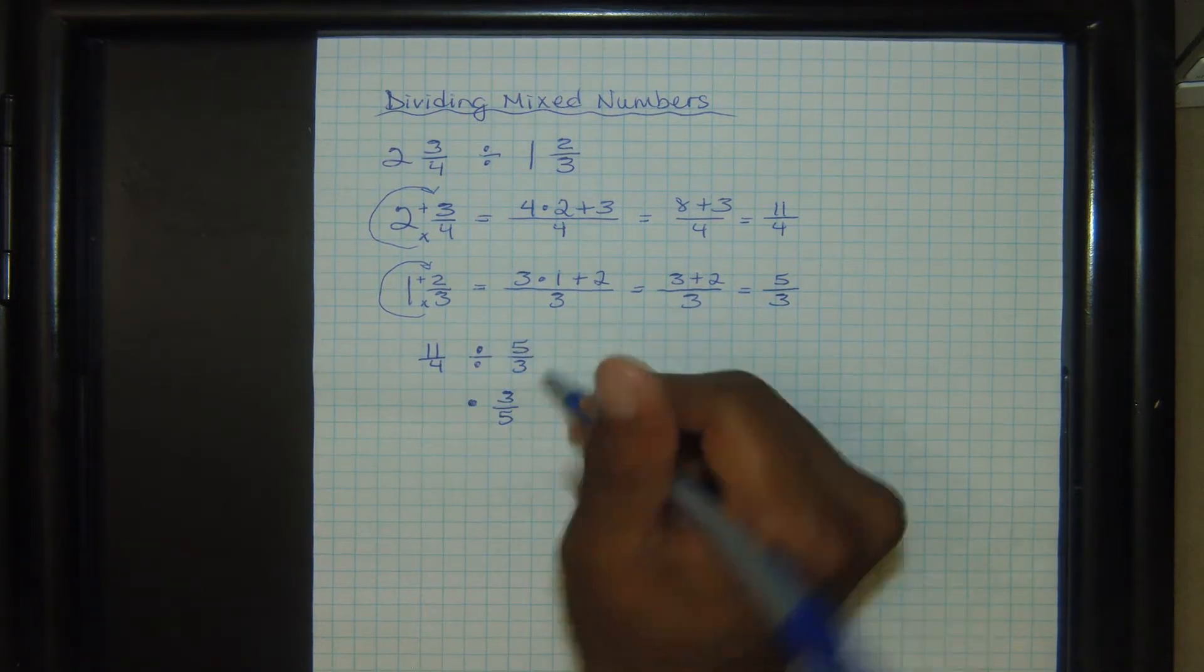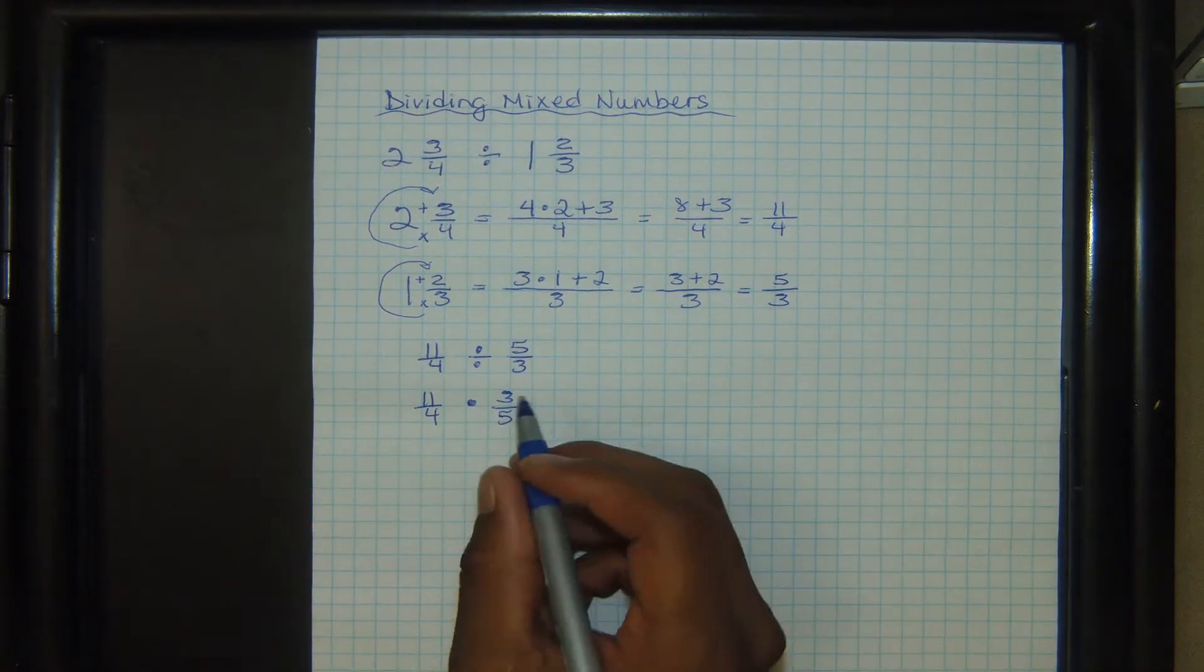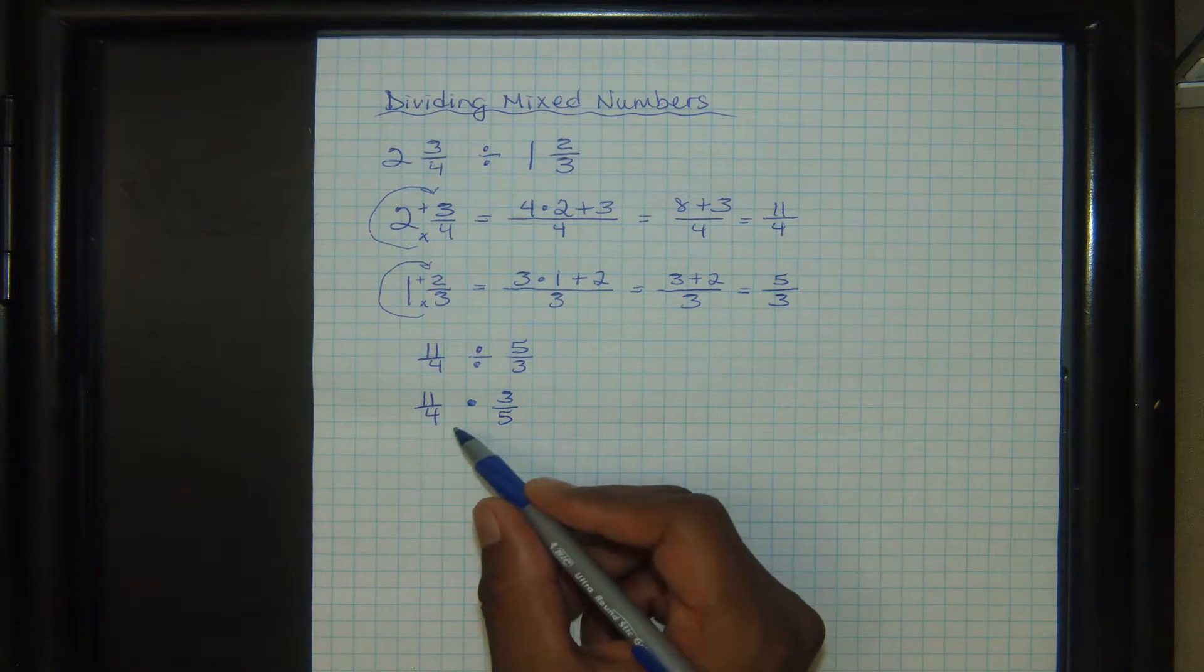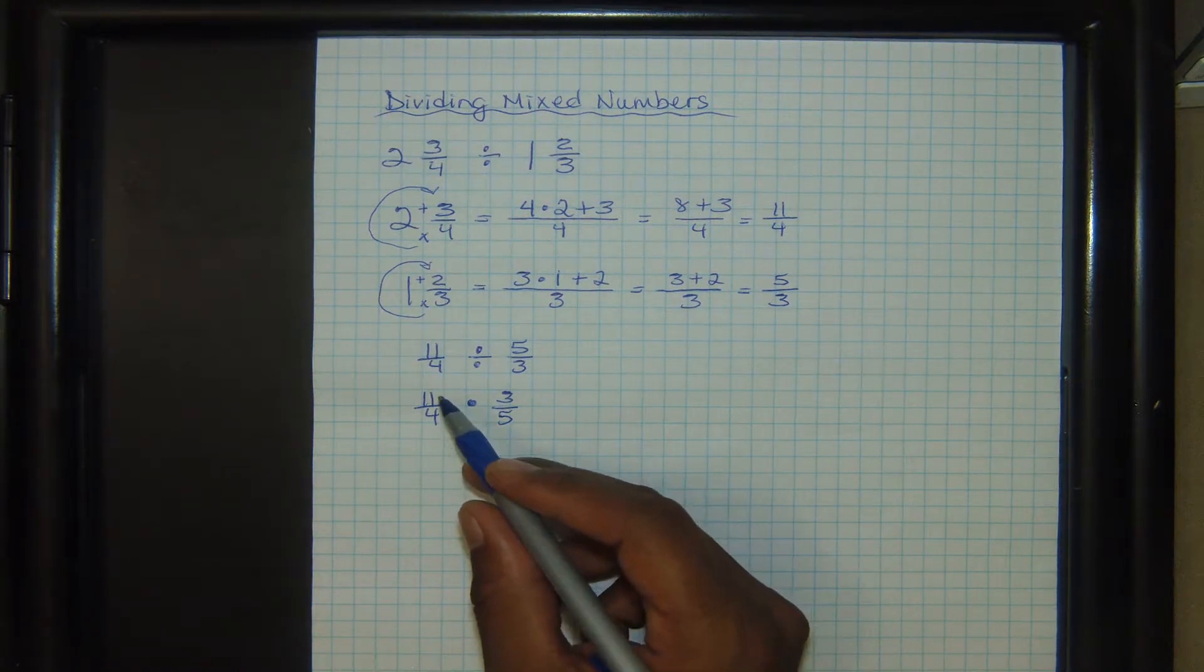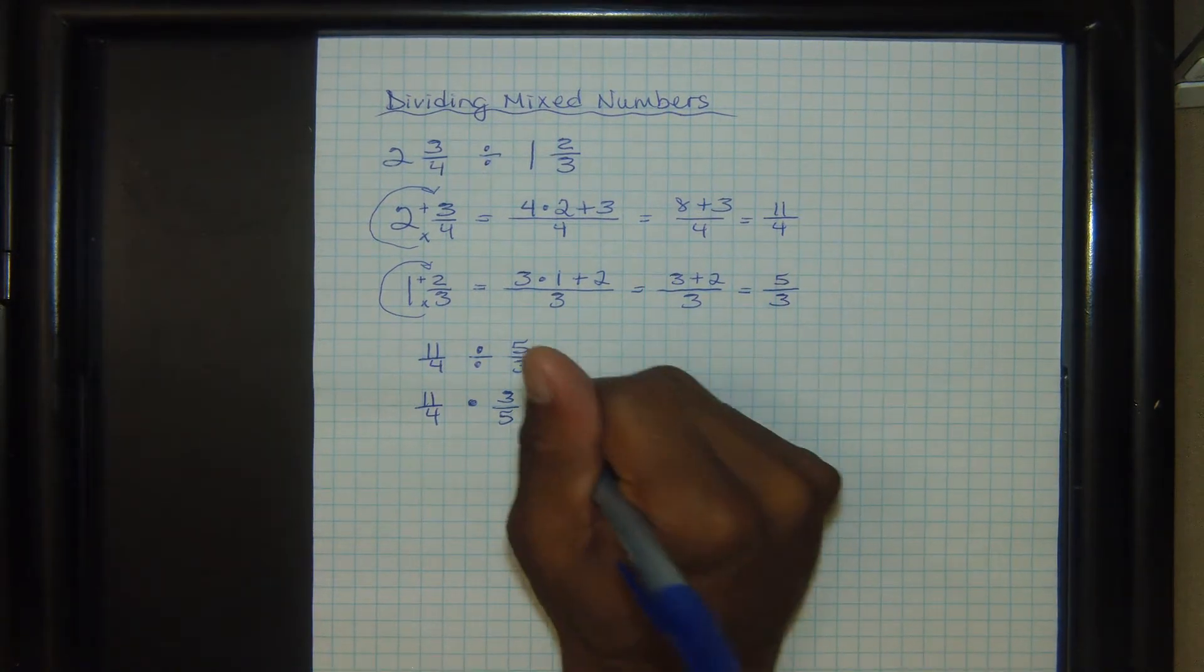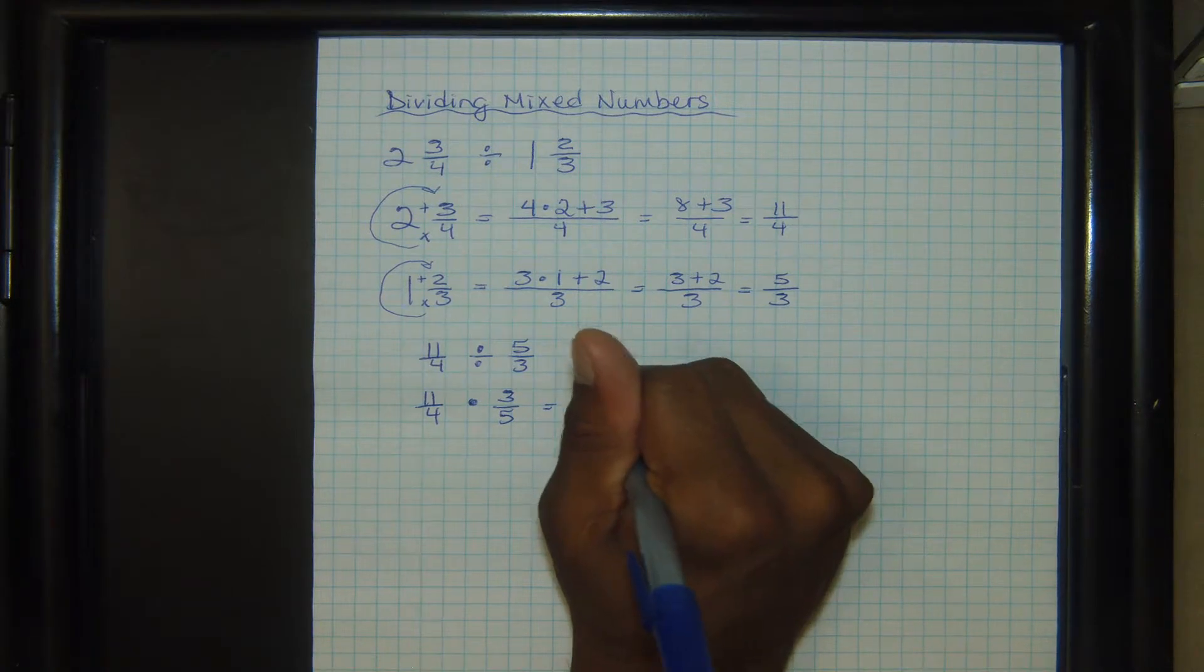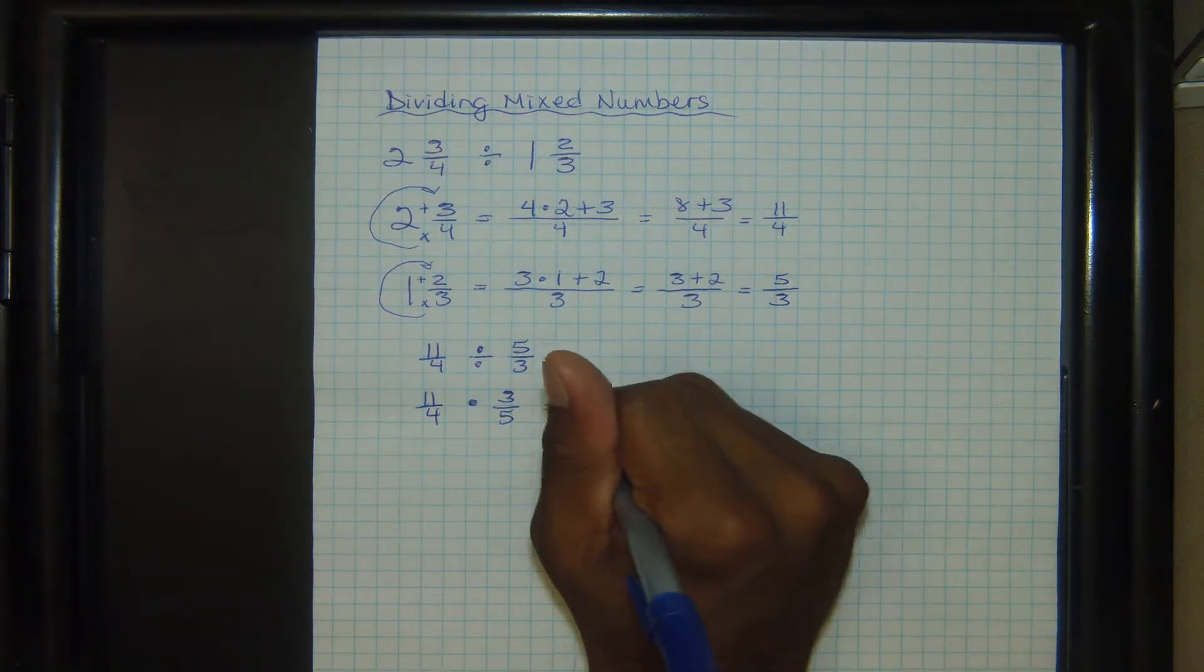The reciprocal just means to flip the fraction. The first fraction stays the same. And in this case, there's nothing to simplify here, so we're just going to have to multiply straight across. Eleven times three and four times five. Eleven times three is thirty-three. Four times five is twenty.